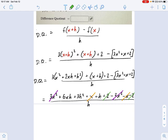So if you combine everything that's left and remaining, it's not a whole lot. We get 6xh plus 3h squared plus h, all divided by h.